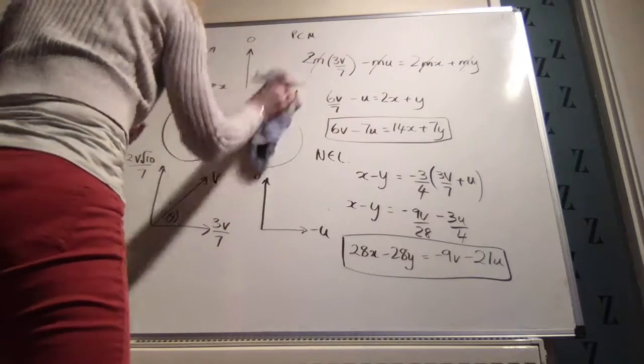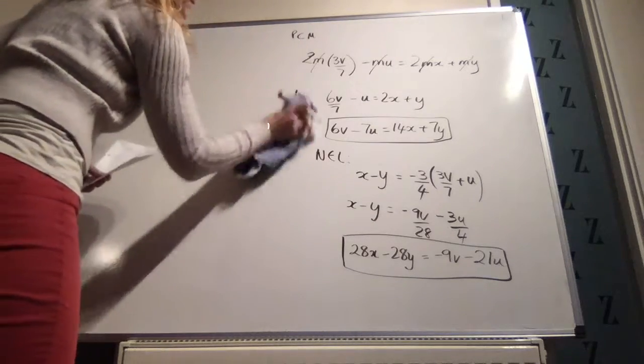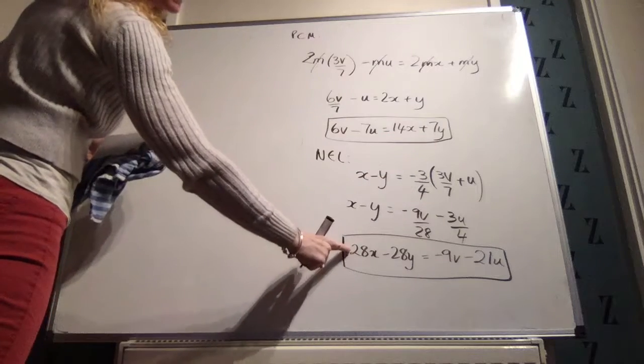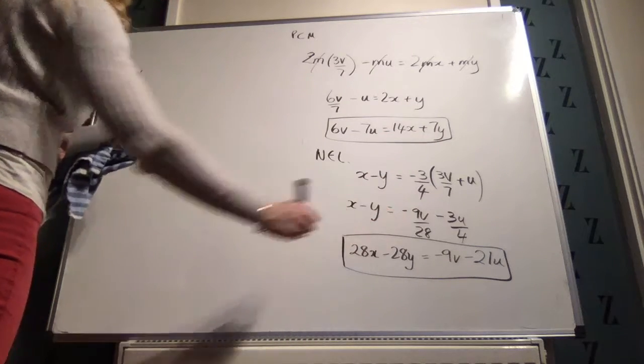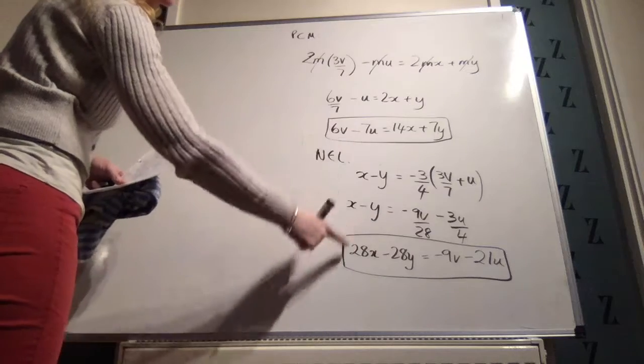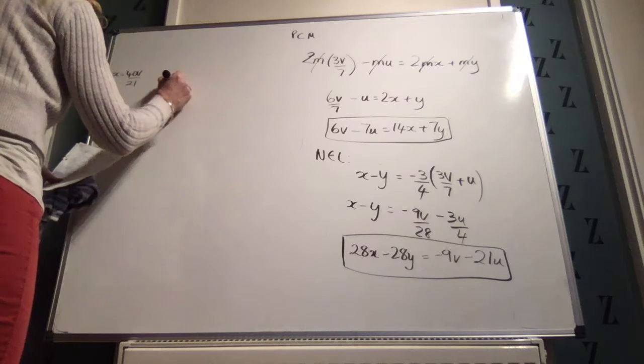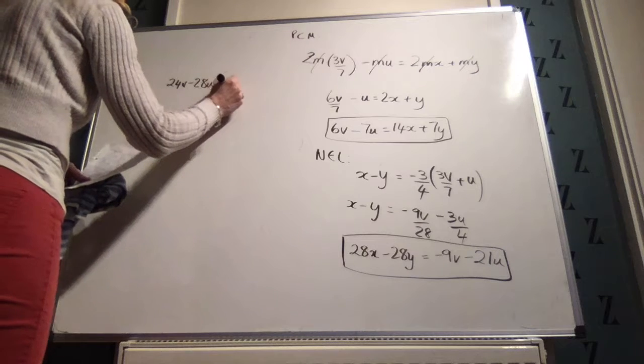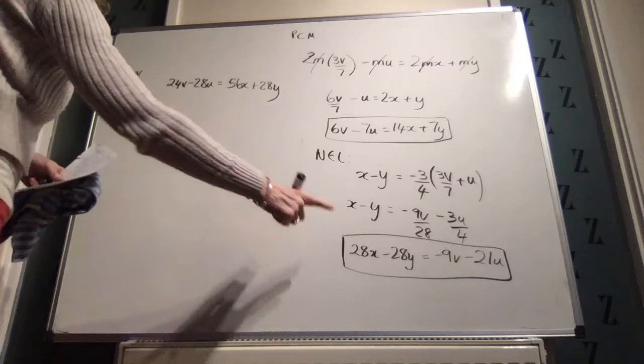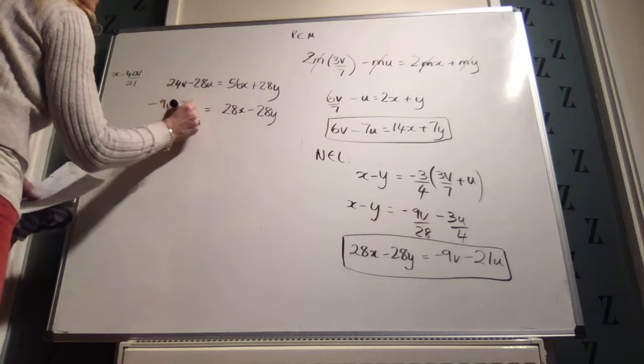So now I'm going to rub this out. So we have a 14x and a 7y. We want to get an expression for x in terms of v and u, and then we have an expression for x here in terms of v, so we will combine those. So we need to get rid of the y's from these two equations. If I multiply this y by 4, I will get 28y. So multiply all of this equation by 4.